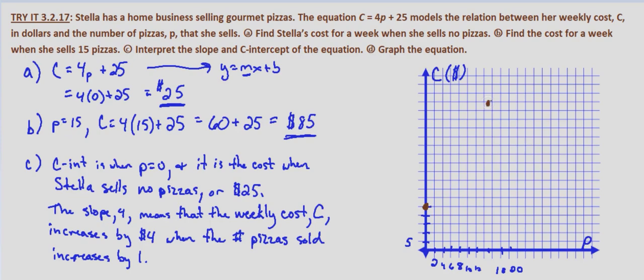Let's use one more point for part D. Let's say P equals 10. When P equals 10 we have C equals 4 times 10 plus 25, which equals 65. So we go over to 10 and up to 65. Then as always we draw a line through the three points. This is the graph of our cost equation. Notice that we stop at zero because it doesn't make any sense to have negative pizzas, and it also wouldn't make sense to have a negative cost.